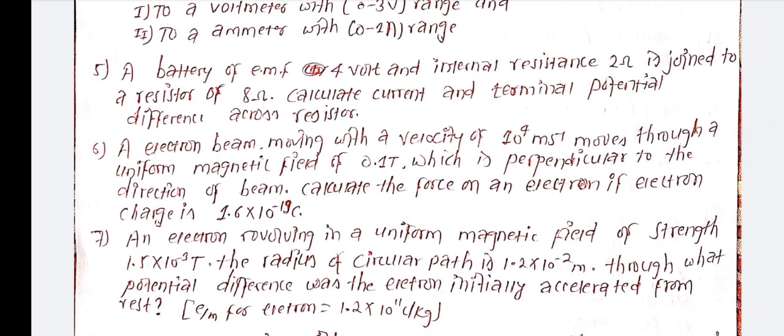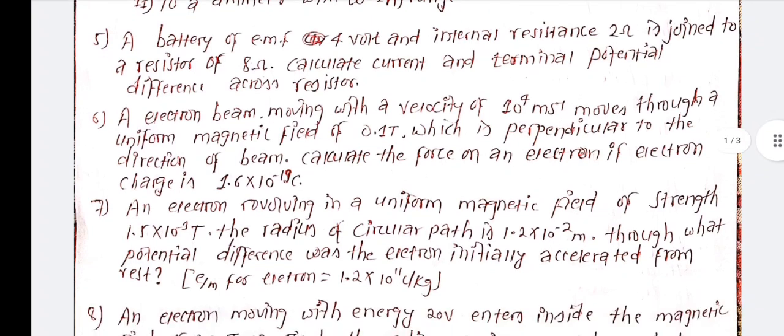An electron revolving in a uniform magnetic field of strength 1.5 into 10 to the minus 3 Tesla. The radius of the circular path is 1.2 into 10 to the minus 2 meters. Through what potential difference was the electron initially accelerated?